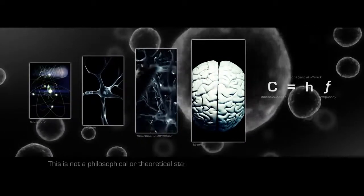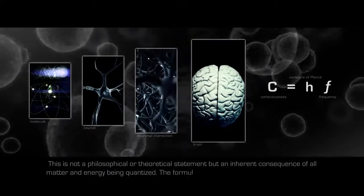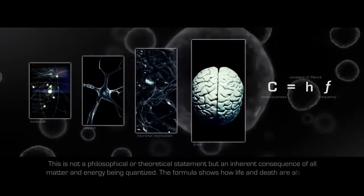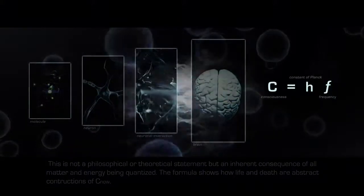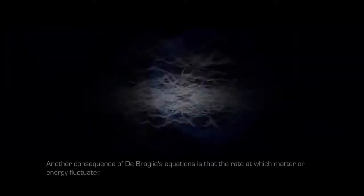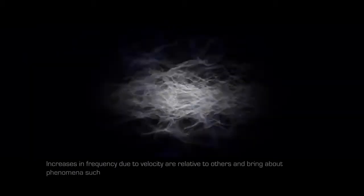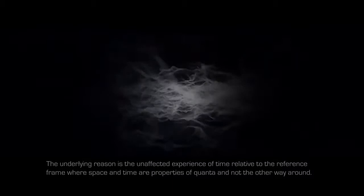This is not a philosophical or theoretical statement, but an inherent consequence of all matter and energy being quantized. The formula shows how life and death are abstract constructions of C. Another consequence of de Broglie's equations is that the rate at which matter or energy fluctuates and acts like a wave or a particle is relative to the frequency of the frame of reference. Increases in frequency due to velocity are relative to others and bring about phenomena such as time dilation. The underlying reason is the unaffected experience of time relative to the reference frame, where space and time are properties of quanta and not the other way around.